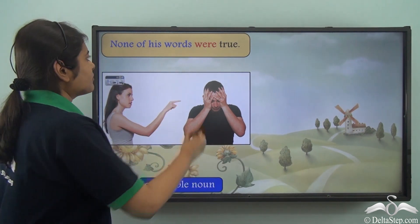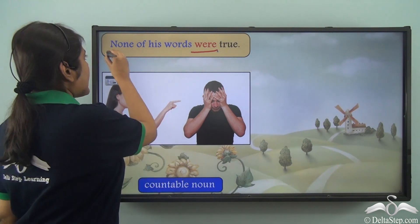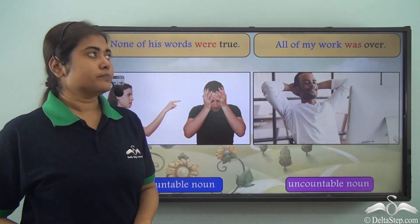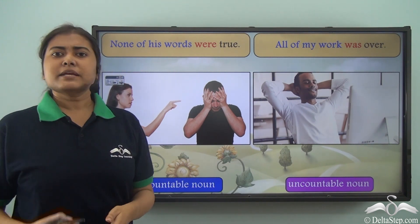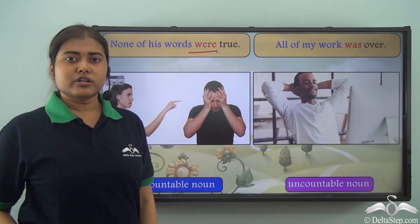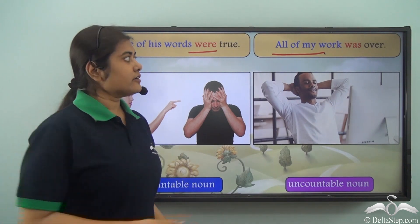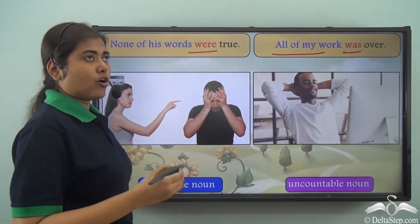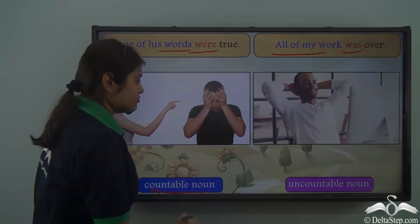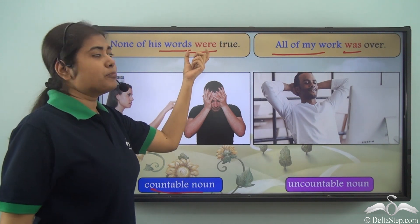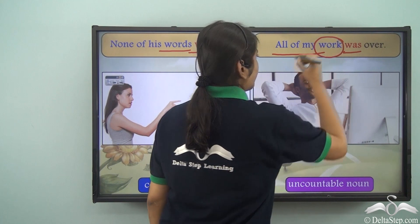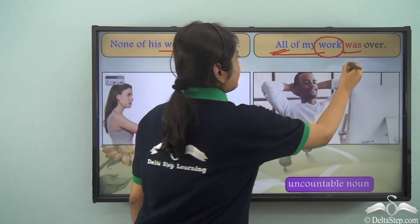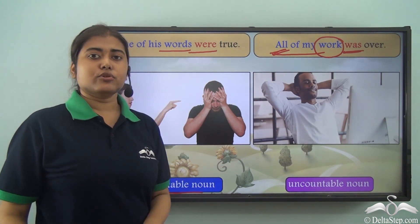Consider 'None of his words were true.' Here 'were' is the plural verb and 'none of his words' is the subject. Now look at 'All of my work was over.' You might wonder why 'none' takes a plural verb and 'all' takes a singular verb. The answer lies in the noun: 'words' is a countable noun, so we use a plural verb; 'work' is an uncountable noun, so even with 'all,' the verb remains singular.